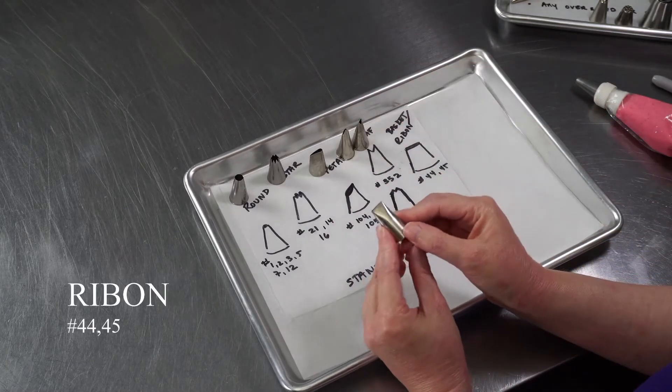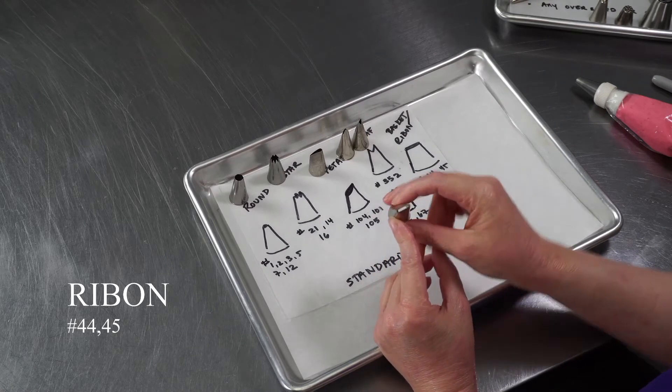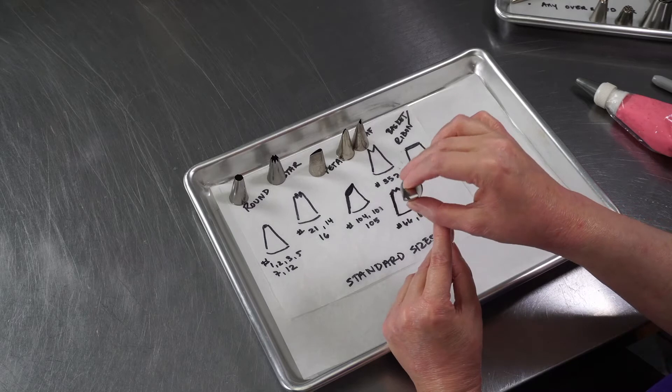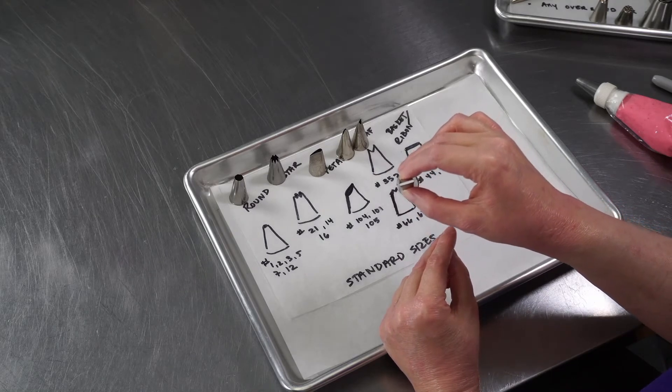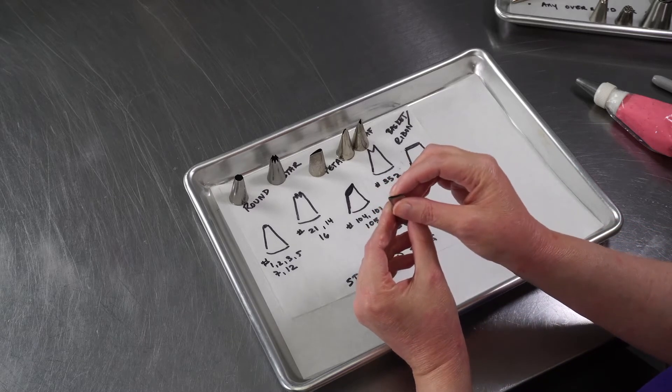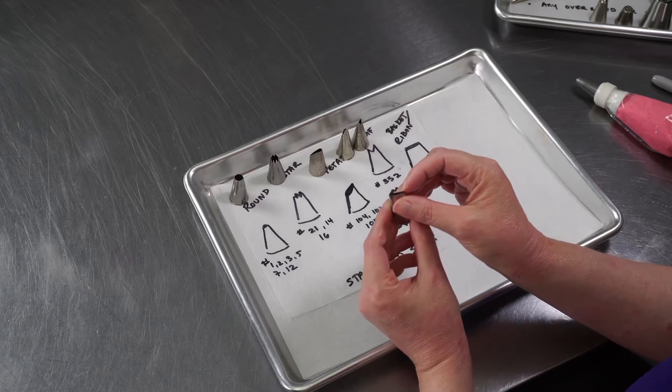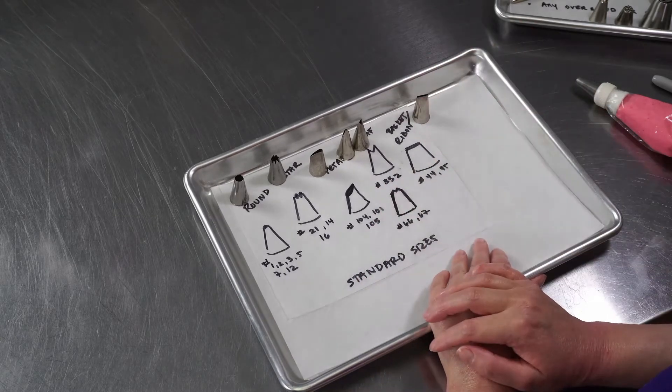And then the last major kind of group would be the ribbon or basket weave tips. These are just a flat, rectangular shaped opening. They're great for doing basket weaves on the side of the cake. Some of them are flat on both sides, some of them will have little tines on one side and will give you little textured lines, and you can use them to do a few different things.